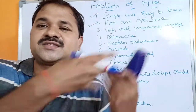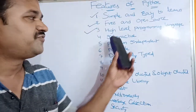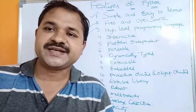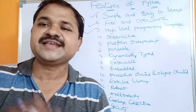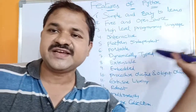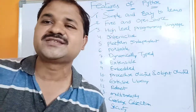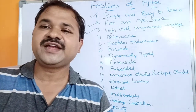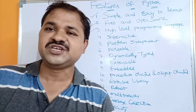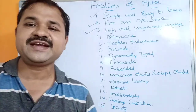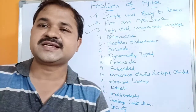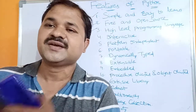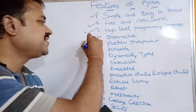The third feature is that Python is a high-level programming language. High-level means it is written in the form of alphabets, digits, and symbols, making it very easy to learn and understand. In contrast, machine-level language uses zeros and ones. Just like C, C++, and Java, Python is a high-level programming language.